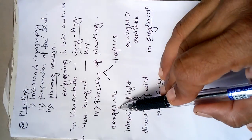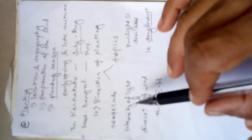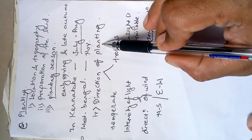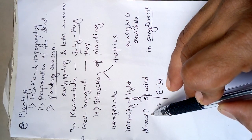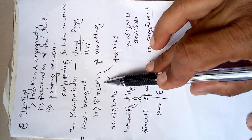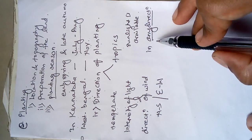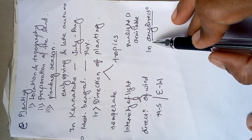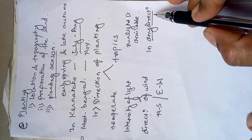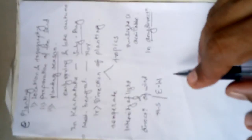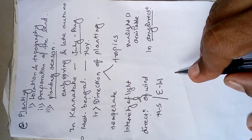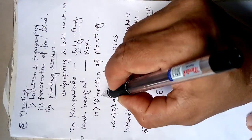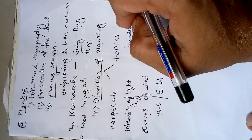In the temperate region, the direction of planting is dependent on the intensity of light and direction of the wind. When studying the direction of planting in the tropics, we can plant mulberry in any direction. However, on slopey land, the rows should be parallel to the contour lines. This covers all aspects of the direction of planting.